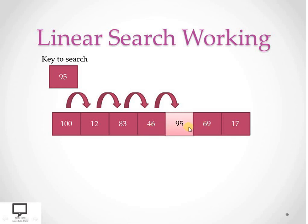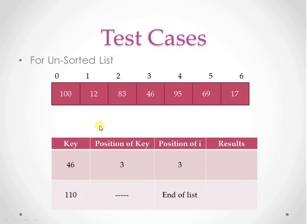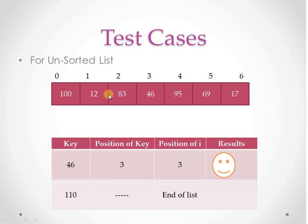To explain all these things, I would like to take the help of a C program for the same task. Before that, we will see some test cases. If my list is unsorted, the first test case: searching for key 46 — it is present at the third position, so the position of key is 3, index I is 3, and the search is successful. For key 110, it is not present; we reach the end of the list, so the search is unsuccessful.